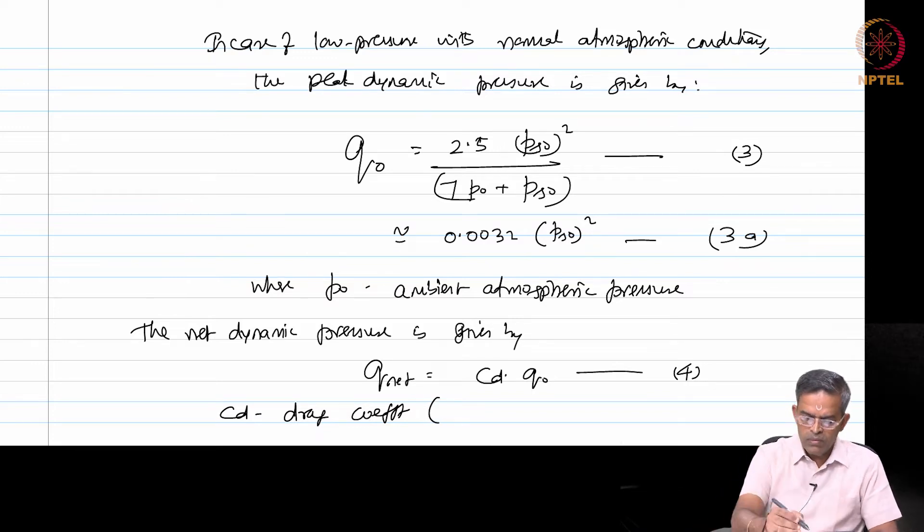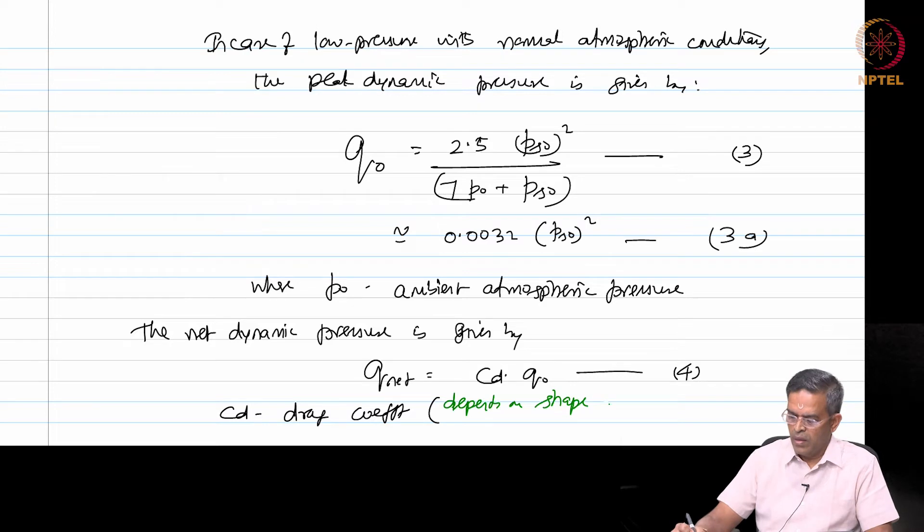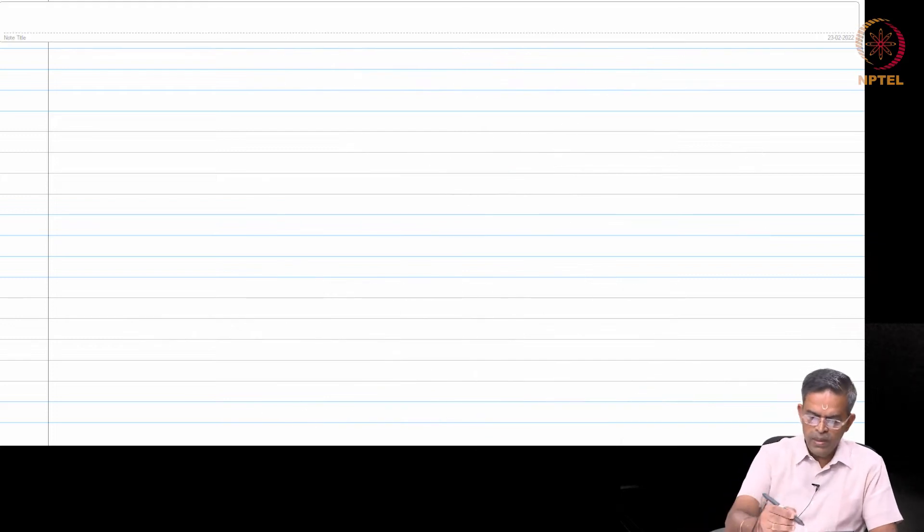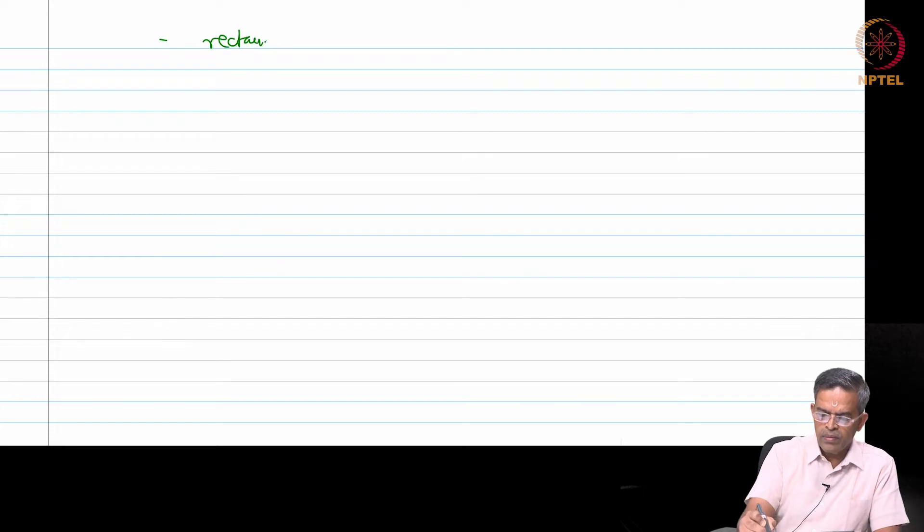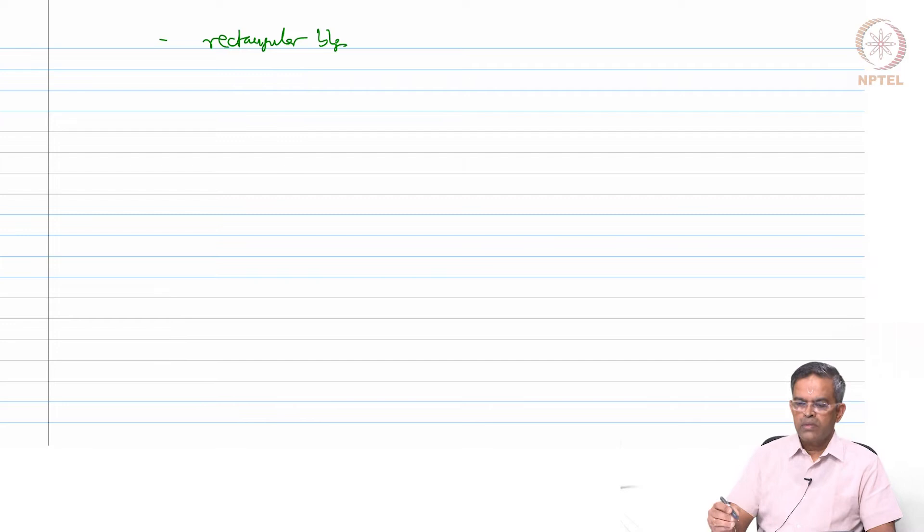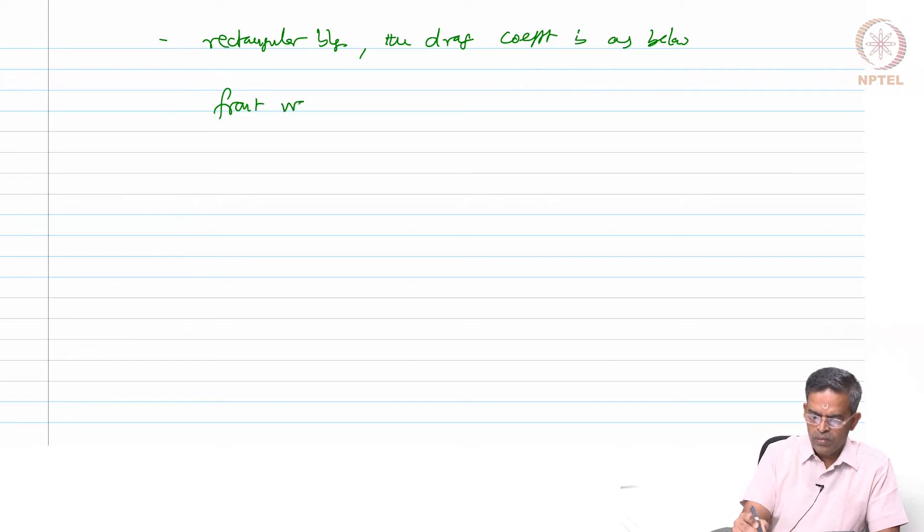The drag coefficient depends on shape and size of the obstructing surface. For example, in case of a rectangular building, the drag coefficient is given by for front walls it is plus 1.0, for side walls, rear walls and roof it is given as minus 0.4.